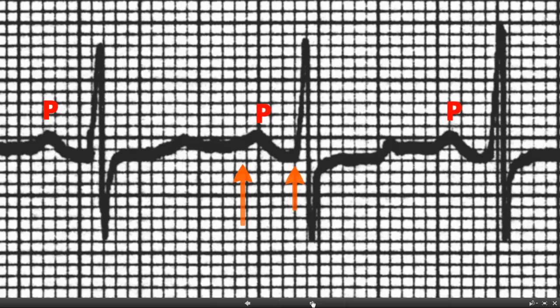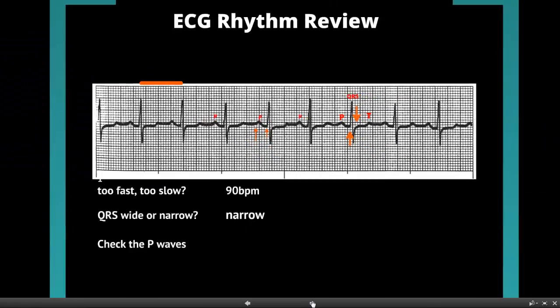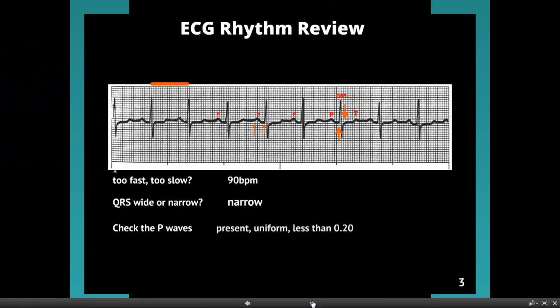It's right on the border though. If you look at it, it's four and a half boxes. But all that matters is that it is under five small boxes, under one big box. So evaluating the P-waves: they are present and they are uniform, and they're less than 0.20 seconds.